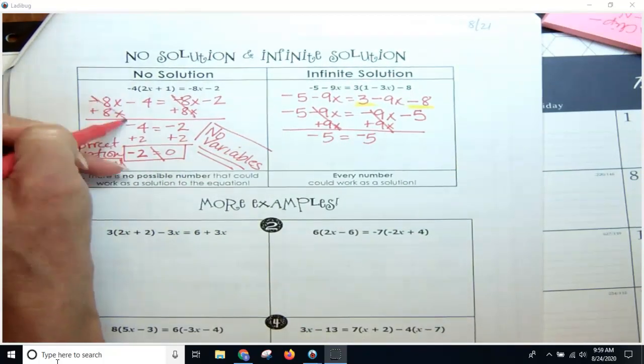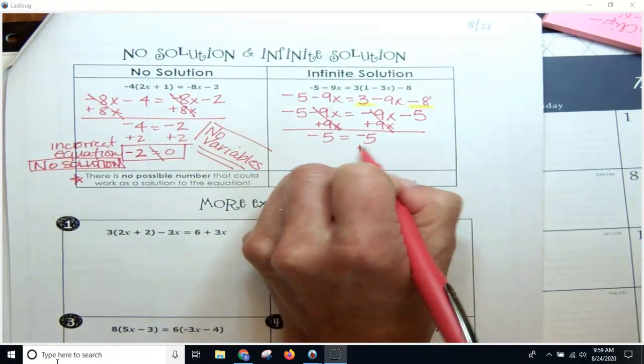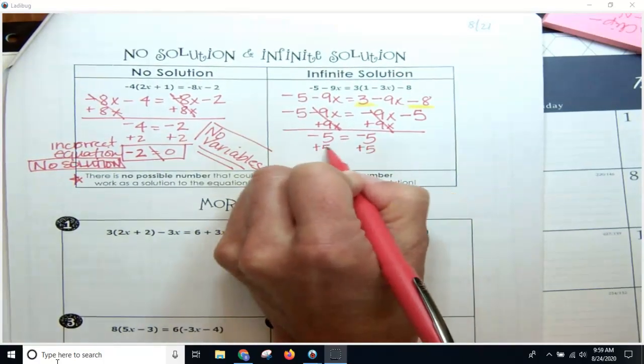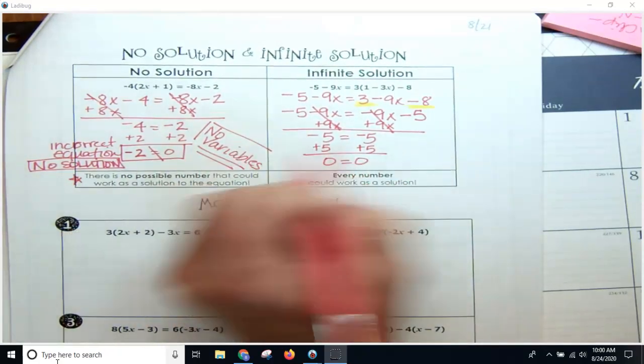These cancel out as zero pairs over here too, so I have negative 5 equals negative 5. I'm going to add 5 to both sides and I'm going to get 0 equals 0.